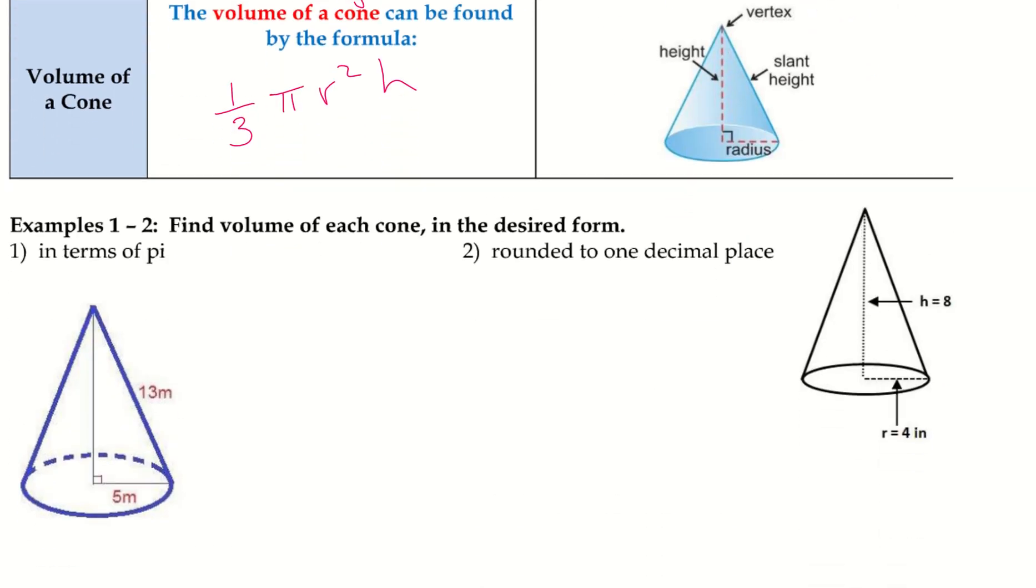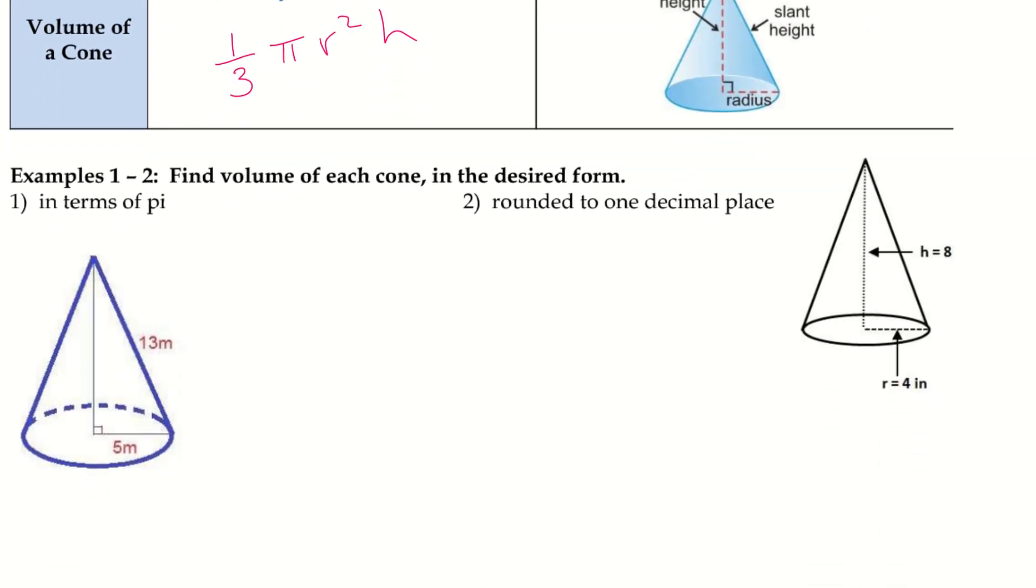Okay, let's go ahead and take a look at a couple examples. So, we want to find the volume of each cone in the desired form. So, this first one wants us in terms of pi.